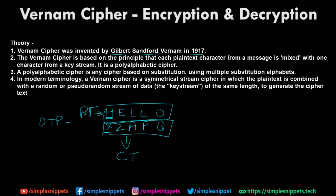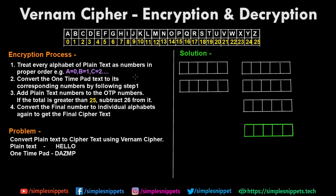We'll talk about symmetric and asymmetric encryption in further video tutorials. Essentially in symmetric encryption, only one key is used — the one-time pad — which is unique and present with both sender and receiver. Since it's a stream cipher, it operates on a stream of characters to generate the ciphertext. Now let's move on to the encryption part. On the screen we have the entire encryption process and a table of characters from A to Z that will be used for number assignments.